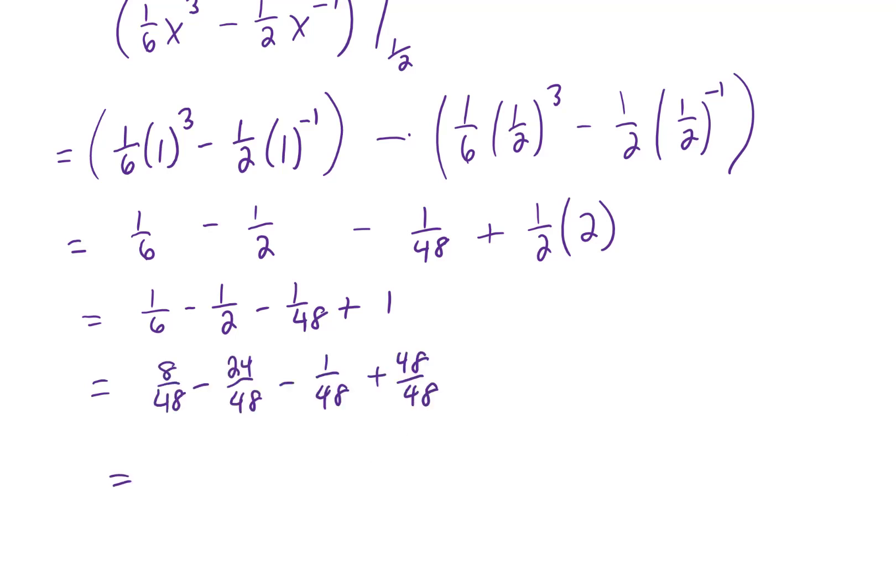I made all of the denominators 48ths. And 8 minus 24 minus 1 plus 48 is 31 over 48. And that is the final answer to this problem.